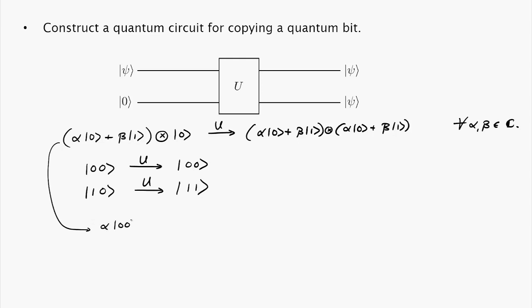So alpha zero zero plus beta one zero under U must get mapped to alpha times U of zero zero plus beta times U of one zero, which is alpha zero zero plus beta one one.